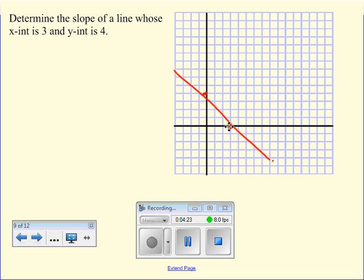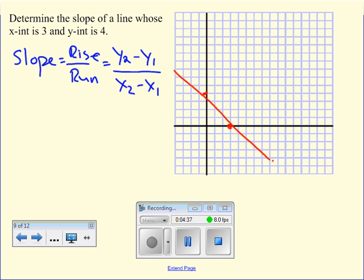Alternatively, I can also apply my slope formula. Slope is equal to rise over run, which is equal to y2 minus y1 over x2 minus x1.